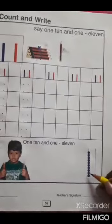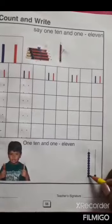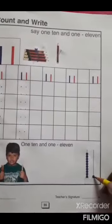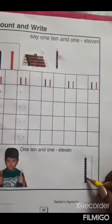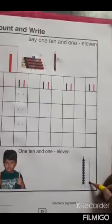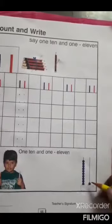So, 1, 10 and 1 is 11. 1, 10 and 1 is 11.